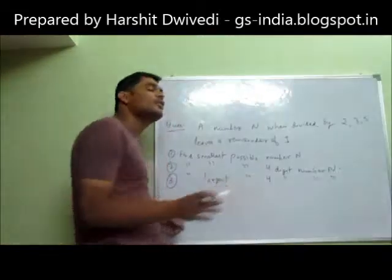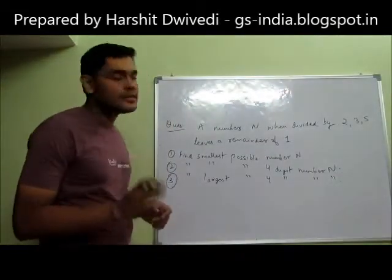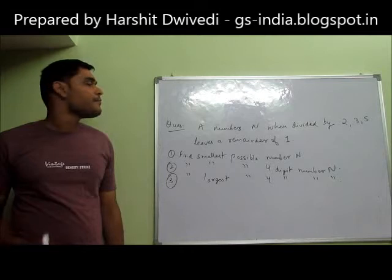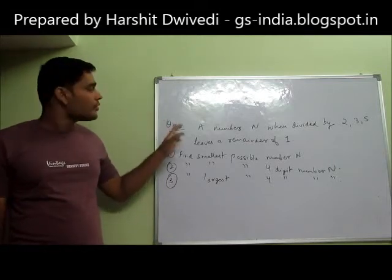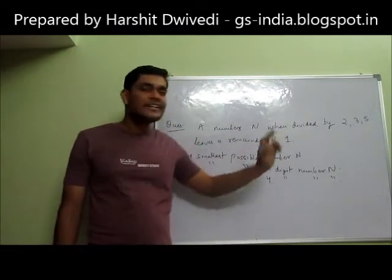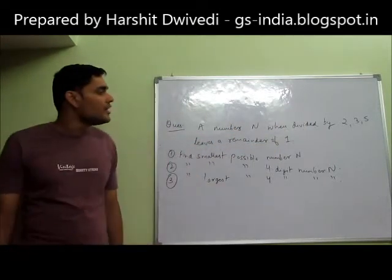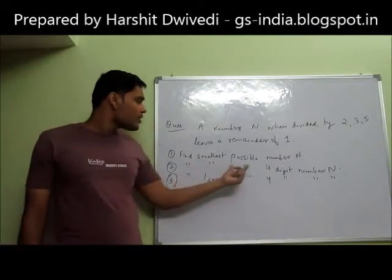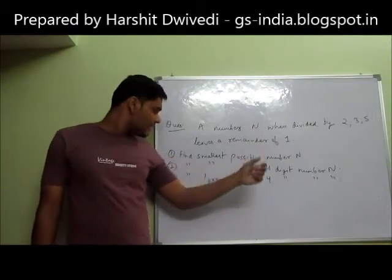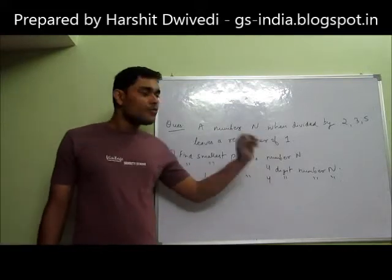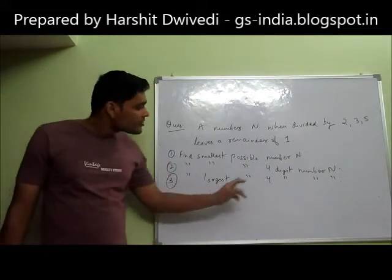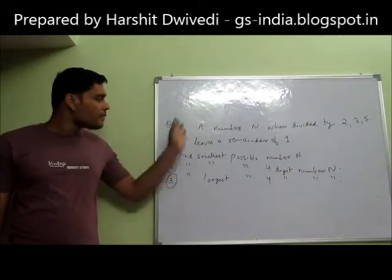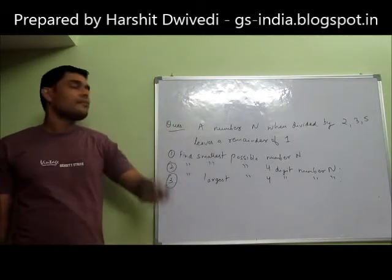Continuing from where we last left, this is the question which is based on LCM type 1. A number N when divided by 2, 3, 5 leaves a remainder of 1. Find the smallest possible number N, find the smallest possible 4-digit number N, find the largest possible 4-digit number N. These three parts are the parts of this question.